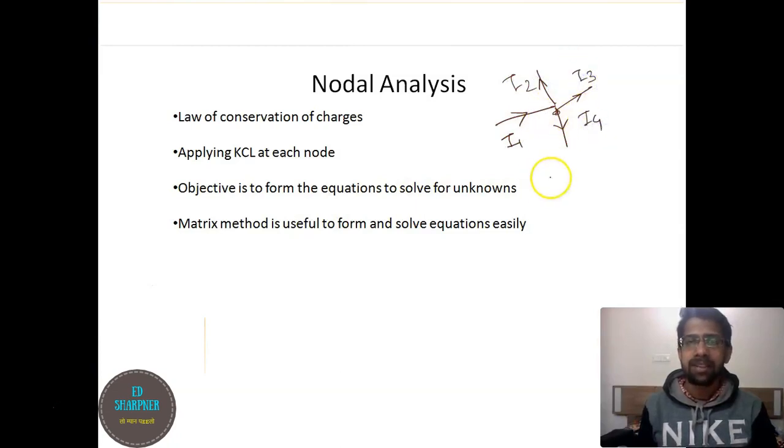While applying KCL we will do i1 minus i2 minus i3 minus i4 equals zero. Because we have assumed the direction coming towards the node to be positive, hence i2, i3, and i4 as they are going away we have taken as negative.